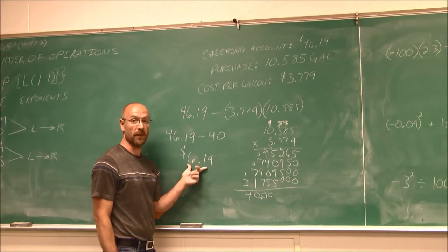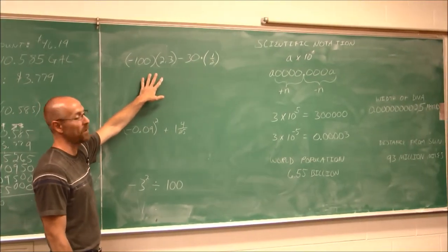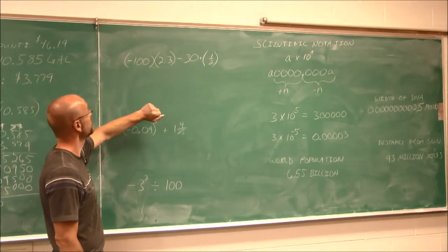I have 46.19 minus 40, which is $6.19. So hopefully I can make it to payday, right? Let's look at some other examples of order of operation when we're dealing with decimals or fractions.